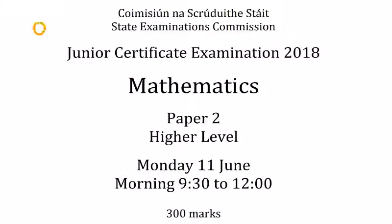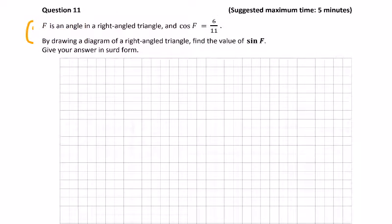Here we have the last of 2018 paper 2, question 11 to 14, so let's get started. Question 11: F is a right angle triangle and cos F equals 6 over 11. They tell you to draw a diagram and find the value of sine F. So any right angle triangle, put F as one of the angles.